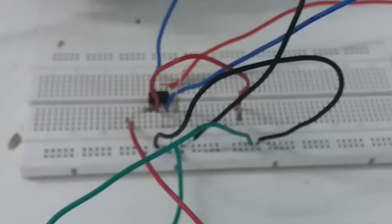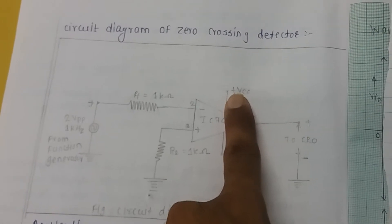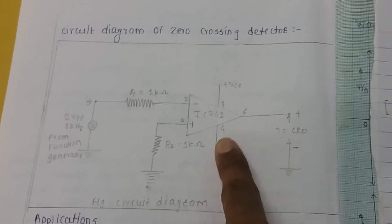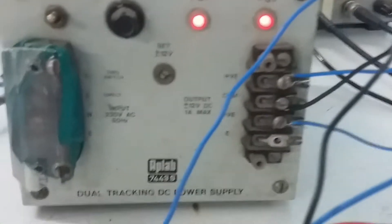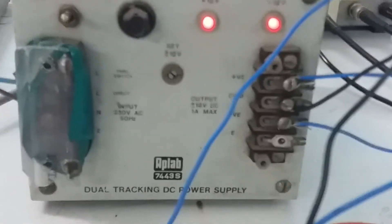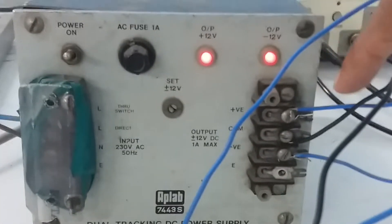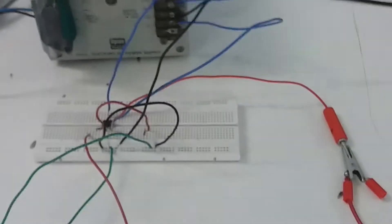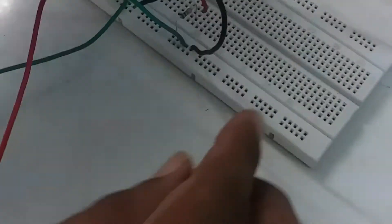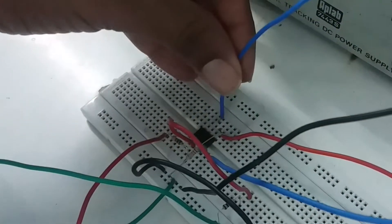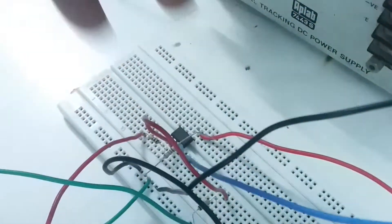I will now slowly remove the connections so it is easy to understand. The seventh pin is plus VCC — that is 12 volts. The fourth pin is minus VCC. I am removing these two pins. Here is the RPS power supply: plus VCC and minus VCC. Pin number seven — plus VCC — is now removed.